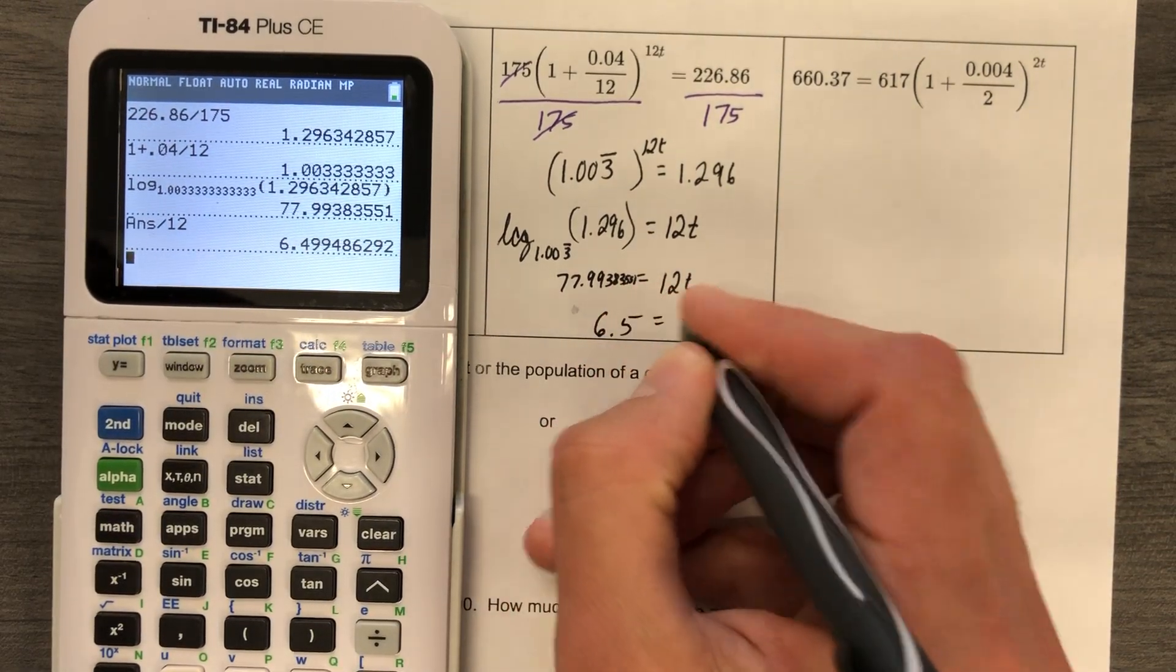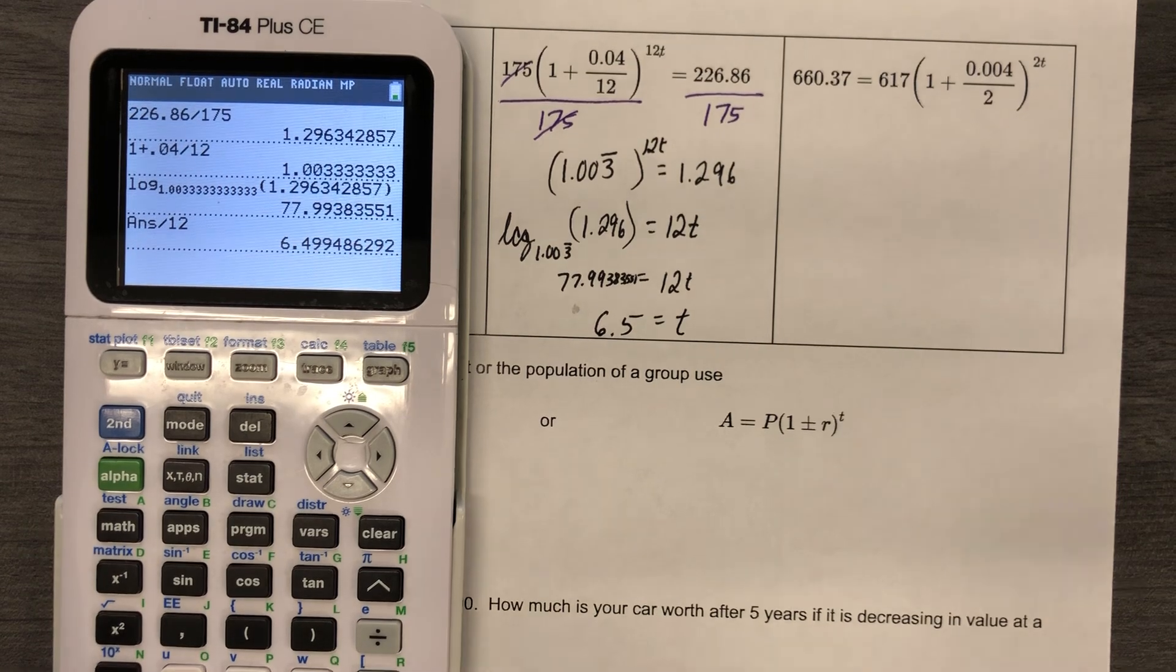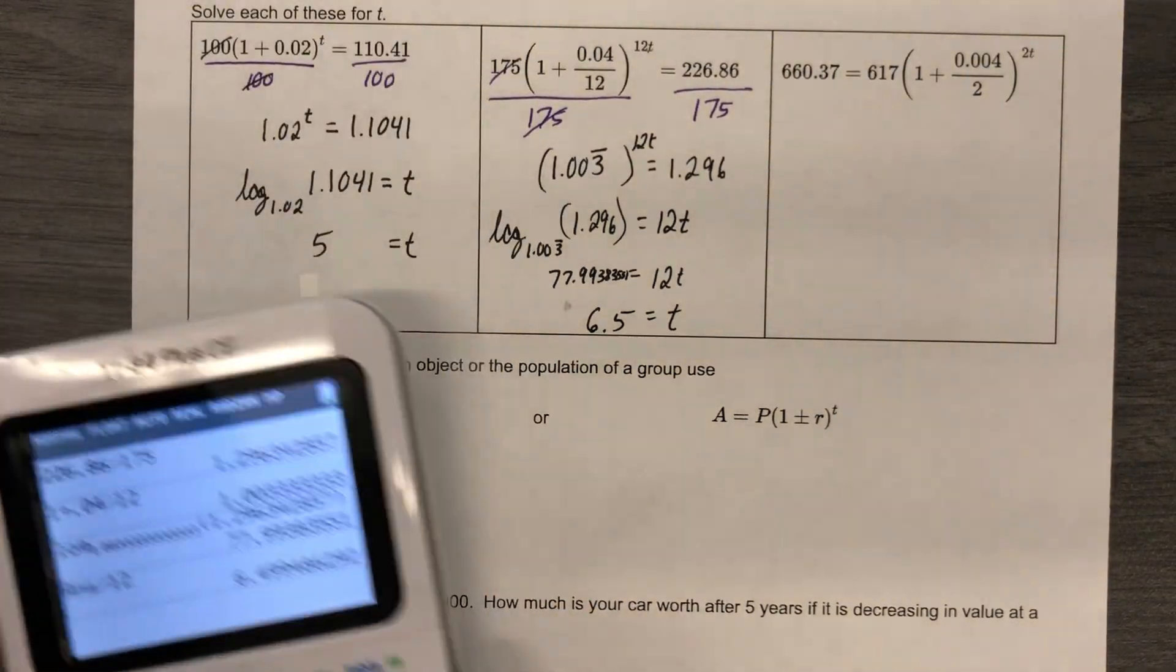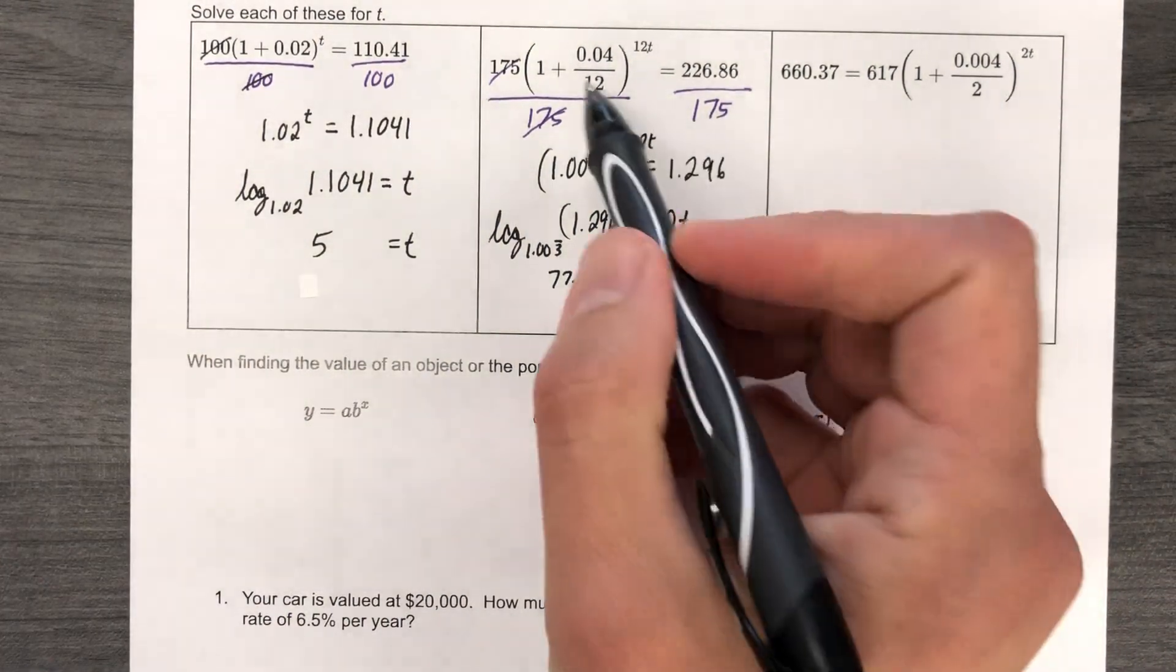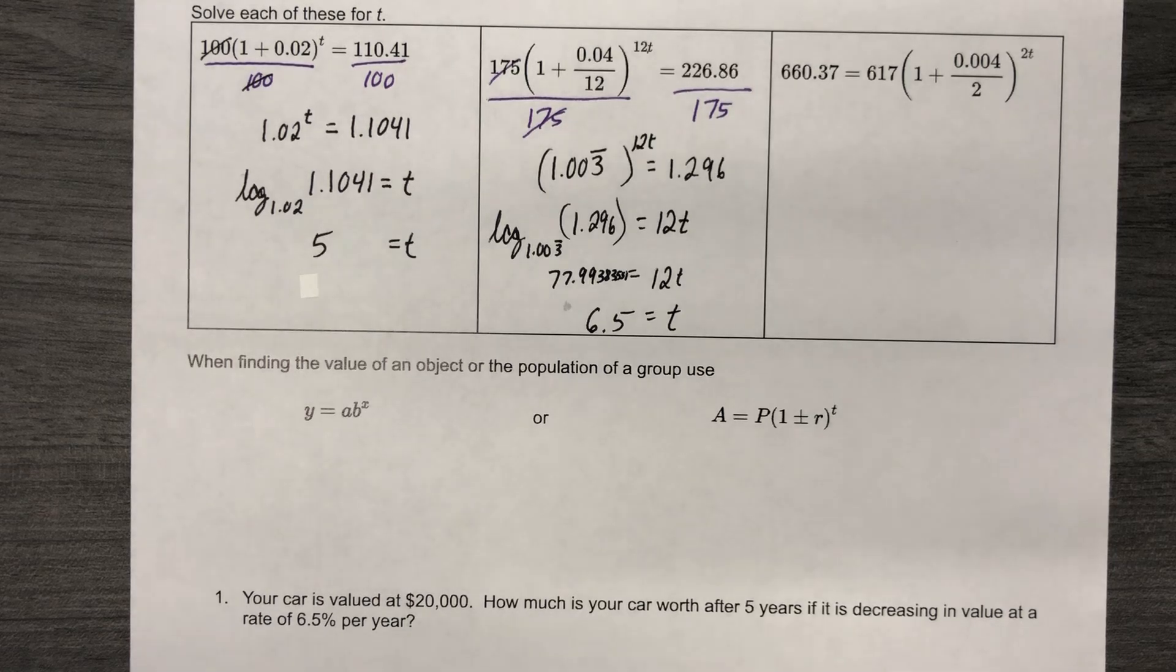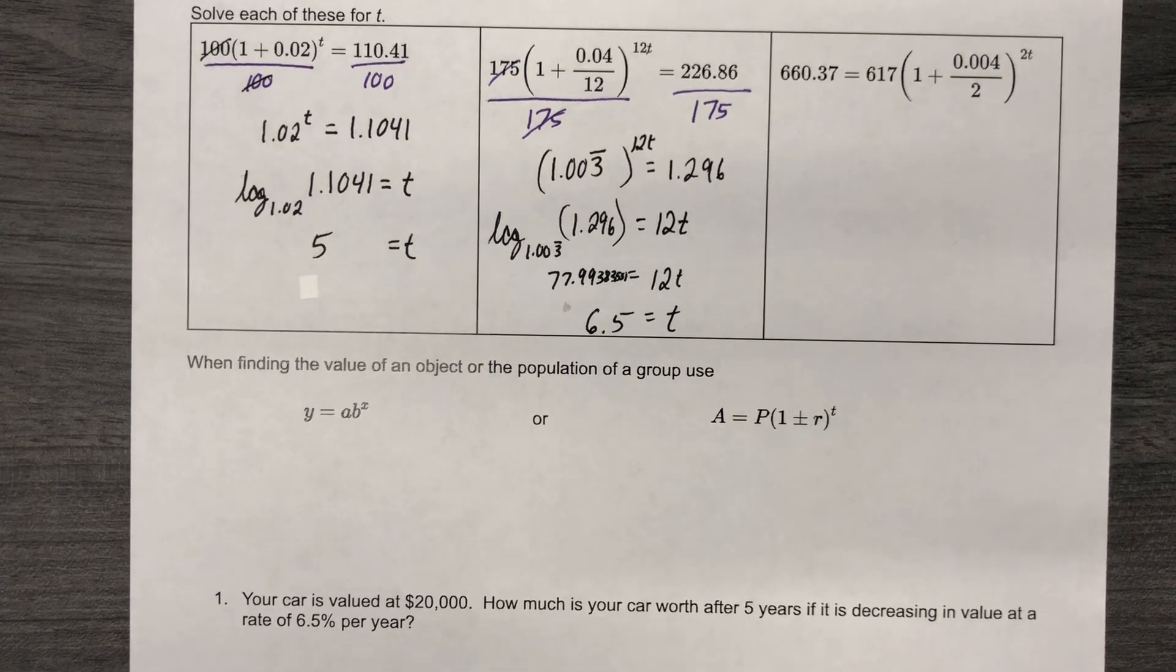6.5, what? I don't know. Probably represents time, years, months, days, seconds, nanoseconds. I don't know. Probably years, considering the structure of this formula and where this lesson is going to go well within the next couple lessons.